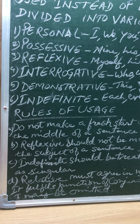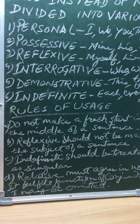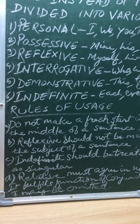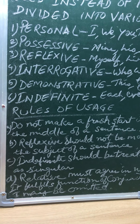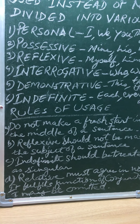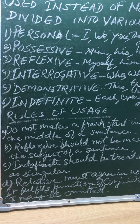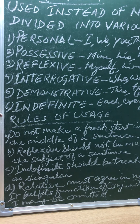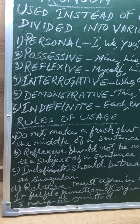Indefinite pronouns like each, every, one, either, neither, somebody, nobody, anybody, anyone should always be treated as singular and be followed by verbs in the singular. For example: every dog has his day; everybody likes him.